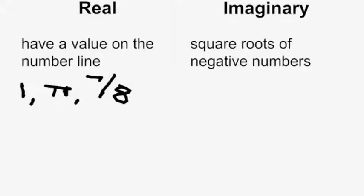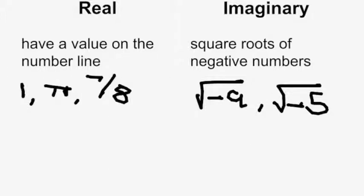Imaginary numbers are square roots of negative numbers. So examples are the square root of negative 9 and the square root of negative 5, which are not real numbers.